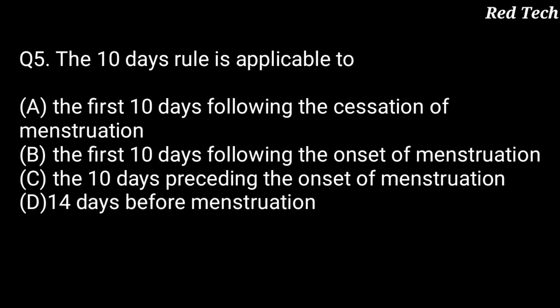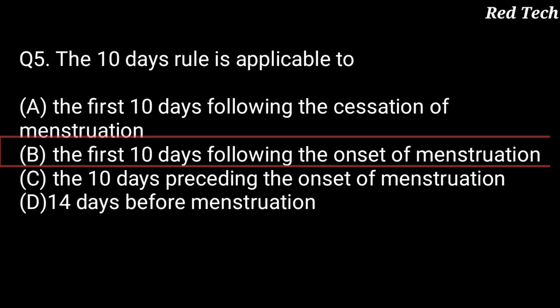Question number 5: the ten day rule is applicable to — option A is first ten days following the cessation of menstruation, option B is the first ten days following the onset of menstruation, option C is the ten days preceding the onset of menstruation, and option D is 14 days before menstruation. The right answer is option B — the first ten days following the onset of menstruation.